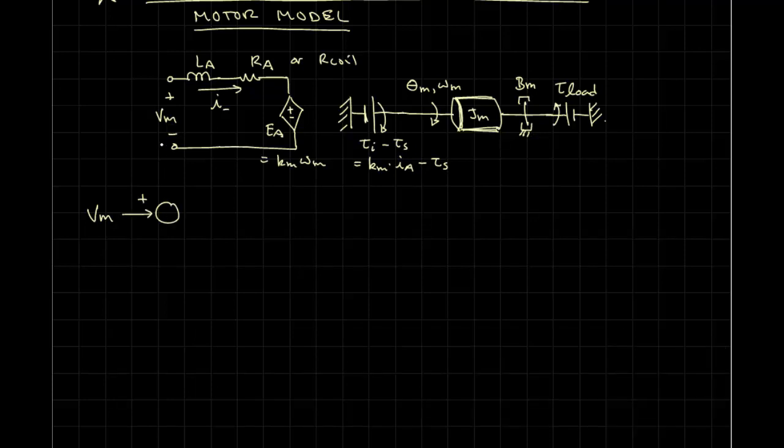This voltage is going to be applied to a combination of three elements: L-A, R-A, and E-A. So, what we're going to do first is we're going to ignore L-A on first pass. We'll add in L-A afterwards.